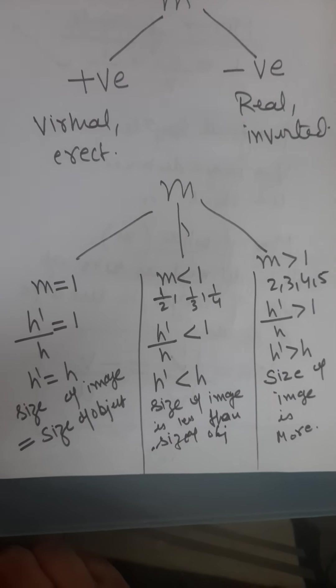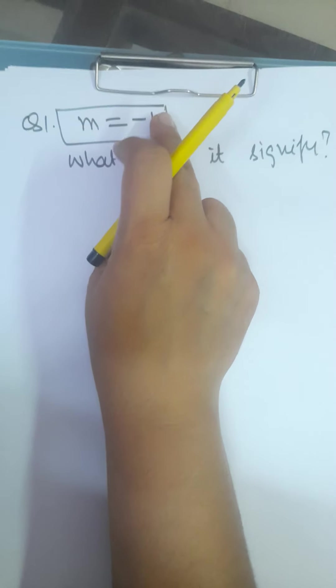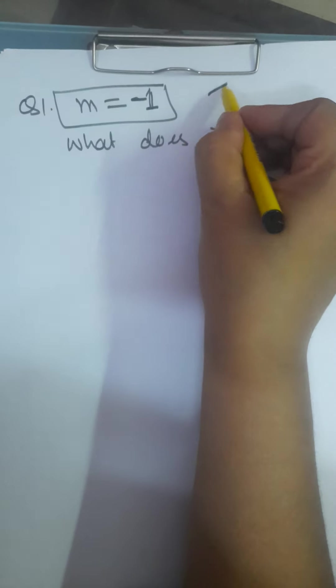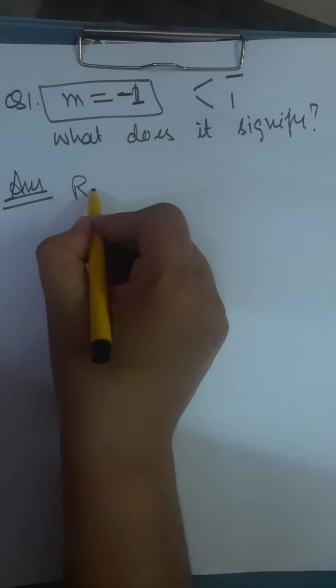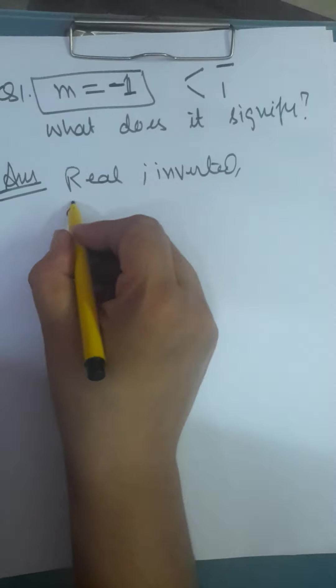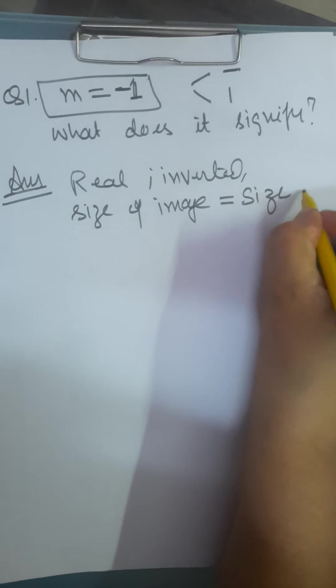So that you can understand it very clearly. Now, for example, if magnification comes as minus 1 — what does it signify? First look carefully: in magnification you need to see two things separately. Minus is separate, and 1 is separate. Minus means the image is real and inverted. And 1 means the size of image is equal to the size of object.